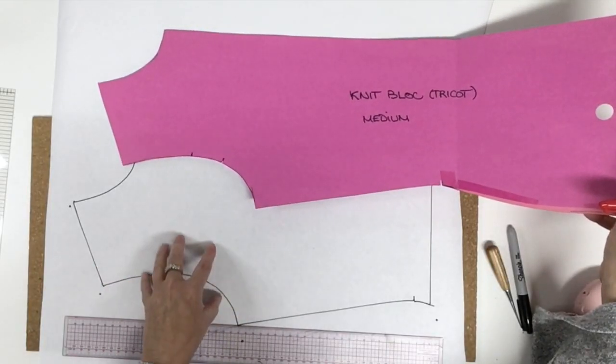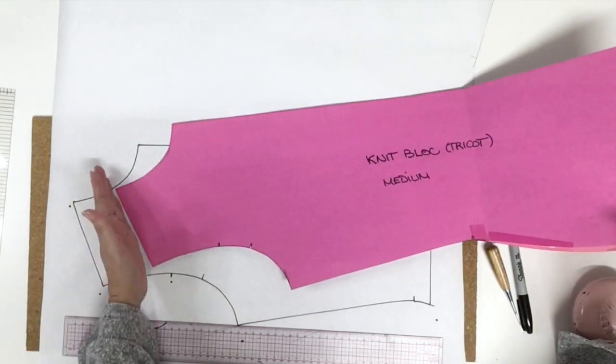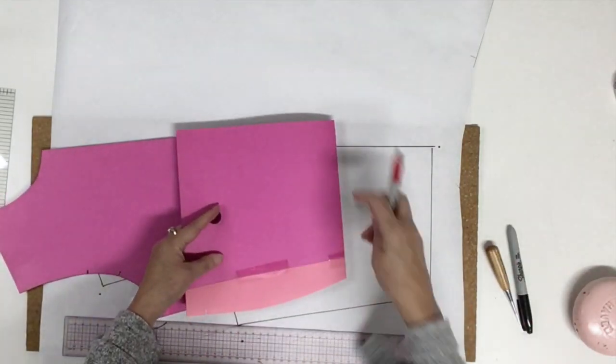Now to trace my new pattern size, I usually start with the straight lines. So I will have my shoulder line to trace and the bottom of my top.